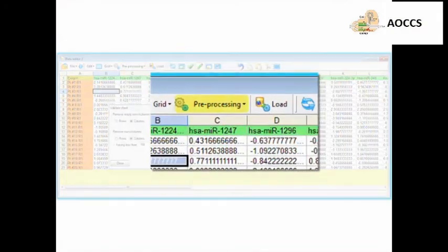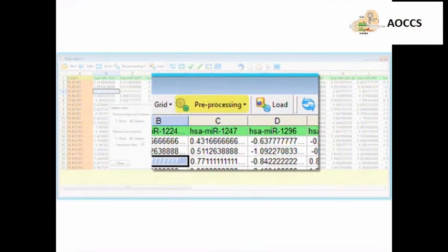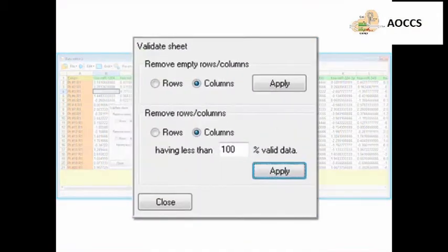Remove empty and almost empty columns by opening the preprocessing window and selecting Validate Sheet, and then selecting Apply on the Remove Empty Columns line. In the line below, choose the desired percentage of valid data and click Apply. Select 100% if you wish to compare only microRNAs common to all samples.